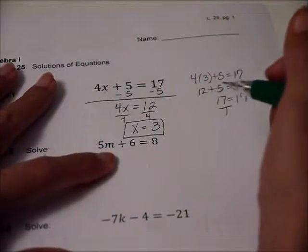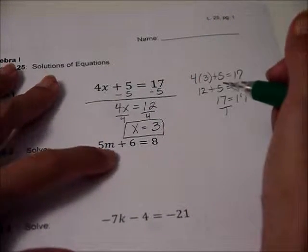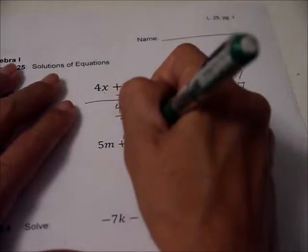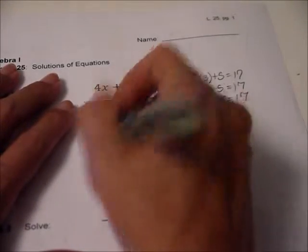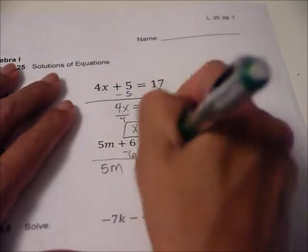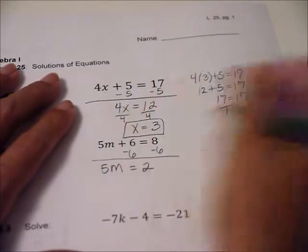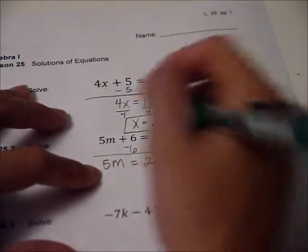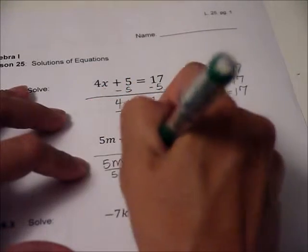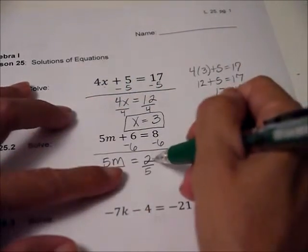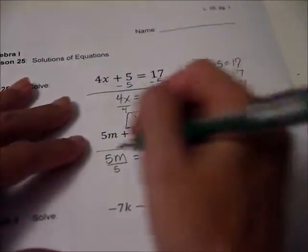All right, same deal. Deal with the 5 last. We're going to deal with the 6 first. Get rid of the 6. That M wants to be alone soon, and I get 2. So let's divide both sides by 5, and yes, you might find out this bugs you. What's 2 divided by 5? It doesn't matter.